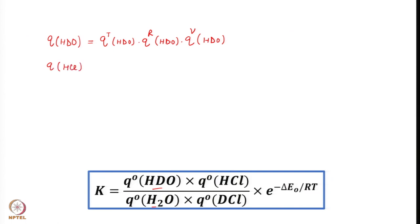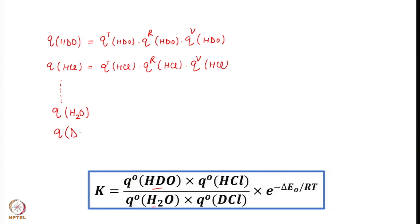Similarly, Q(HCl) = Q_trans(HCl) × Q_rot(HCl) × Q_vib(HCl), and analogously for Q(H₂O) and Q(DCl). So you require Q_trans, Q_rot, and Q_vib for each molecule. This means it can be a very cumbersome and lengthy process — but we will see how it simplifies.